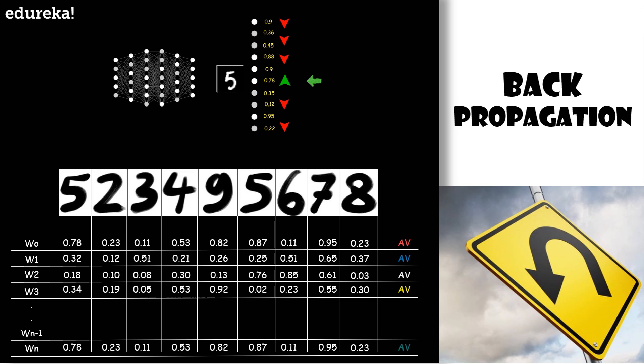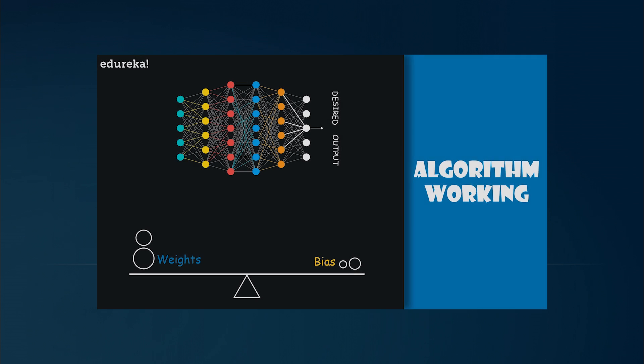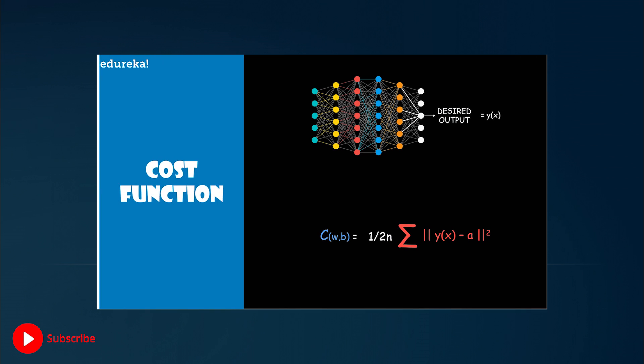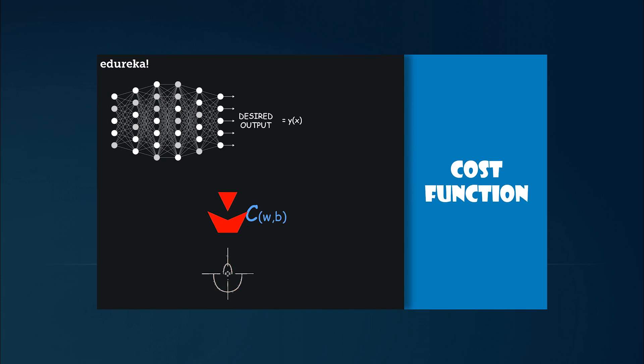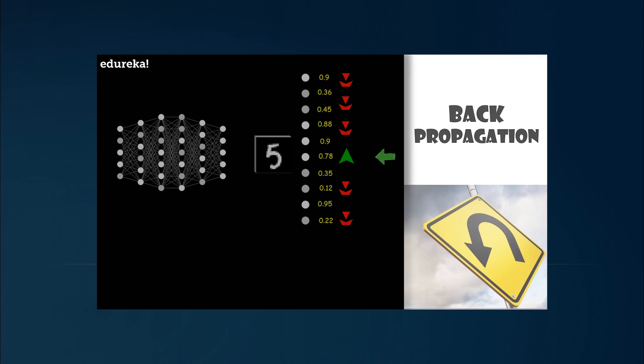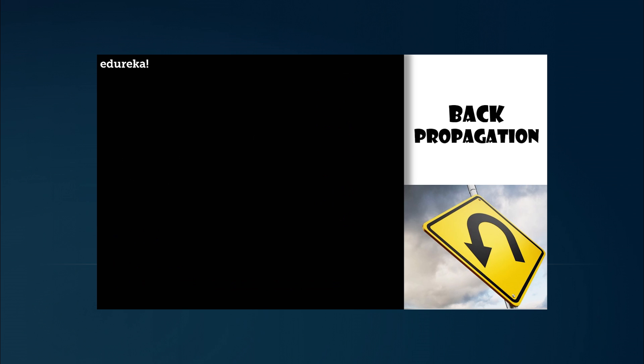Now this collection here of the average changes to each weight and bias is proportional to the negative gradient of the cost function. It takes the computer an extremely long time to add up the influence of every single training example every single gradient descent step. So I hope you got an idea of what exactly a gradient descent is, how it works, the various parameters involved in the working of gradient descent, and how back propagation handles all the changes to be made to the weights and biases, which ultimately tells us how the neural network is learning and modifying itself to have a better accuracy.